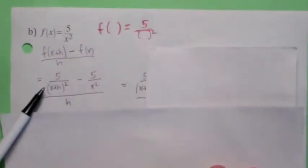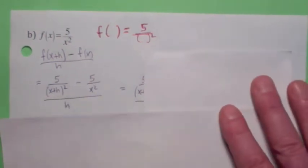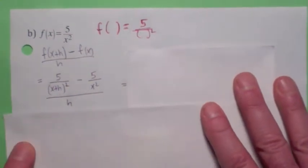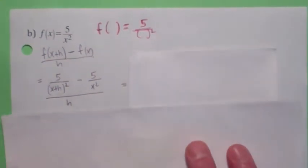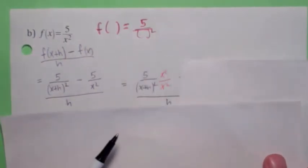So that's what f(x+h) becomes. f(x) is just this, 5 over x squared, and divide by h. So we have to simplify this now. You're going to have to get the common denominator. So you're going to have to multiply top and bottom of the first one by x squared.